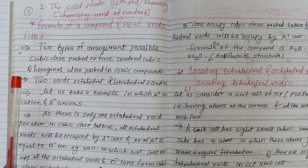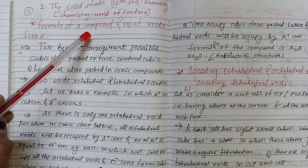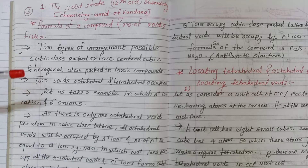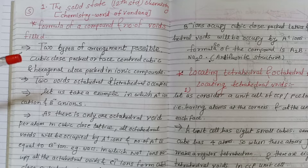Hello students, welcome to my channel Chemistry World by Vandana. Here is the 12th standard, fifth video, Chapter Number One - Solid State. The next part is here: formula of the compound and number of voids filled. We have already discussed crystalline solids and their types. Today we will discuss how many voids are there in a compound and how they are filled. There are two types of arrangement possible: one is cubic close pack (CCP), also called face-centered cubic (FCC), and the second is hexagonal close pack (HCP).